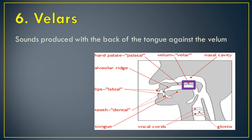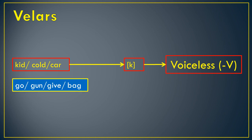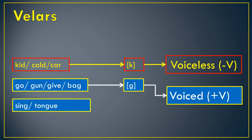Next, we have velars. These are sounds produced with the back of the tongue against the velum. We have /k/ like in 'kid,' 'cold,' or 'car,' which is voiceless; /g/ like in 'gap,' which is voiced; and the /ŋ/ sound like in 'sing' or 'tongue,' represented by the symbol called angma, which is also voiced. So for velars, we have three sounds: one voiceless and two voiced.